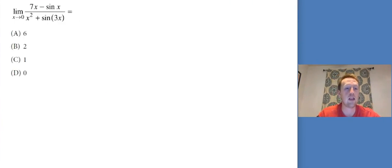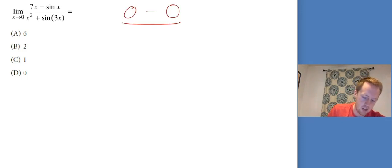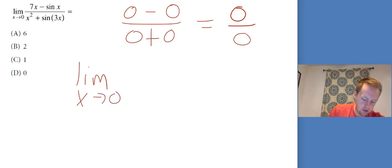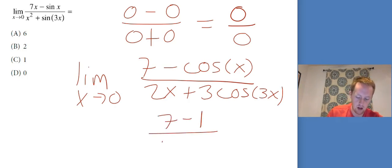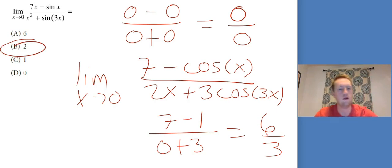If I plug in 0, I get 0 minus 0 on top, 0 plus 0 on bottom. That's perfect for L'Hopital's rule. So the limit as x goes to 0: the derivative of 7x is 7, the derivative of negative sine x is minus cosine x, over derivative of x squared is 2x, derivative of sine of 3x using chain rule is 3 cosine 3x. Now I plug in 0: I get 7 minus 1 on top, 0 plus 3 on bottom. That's 6 over 3, which is 2.